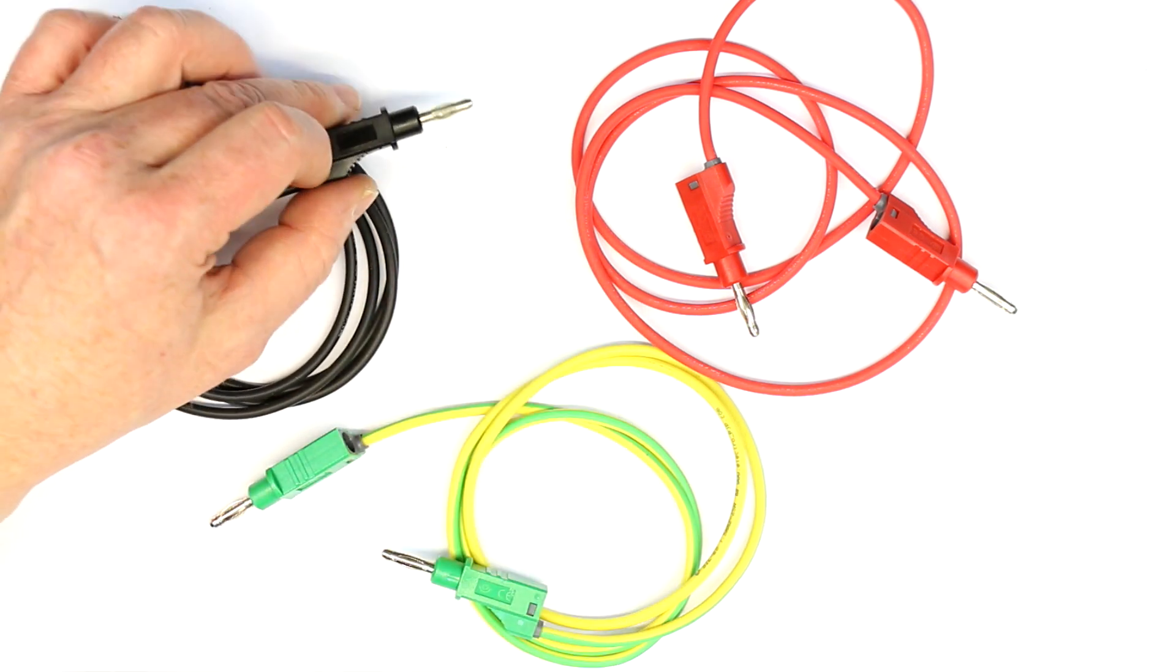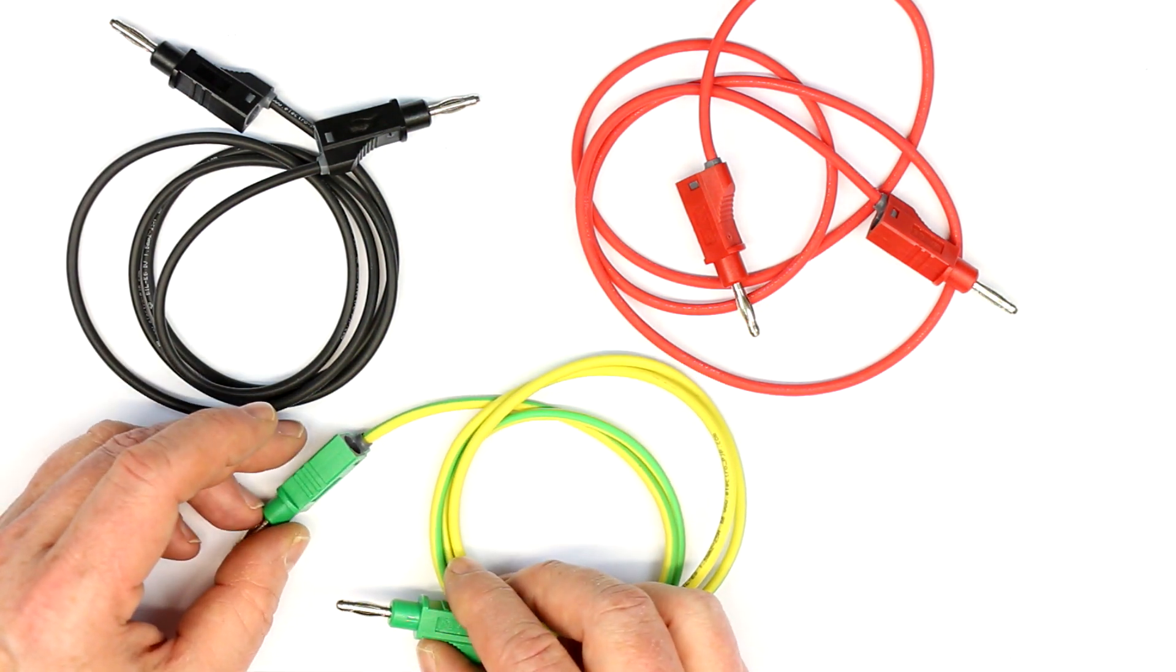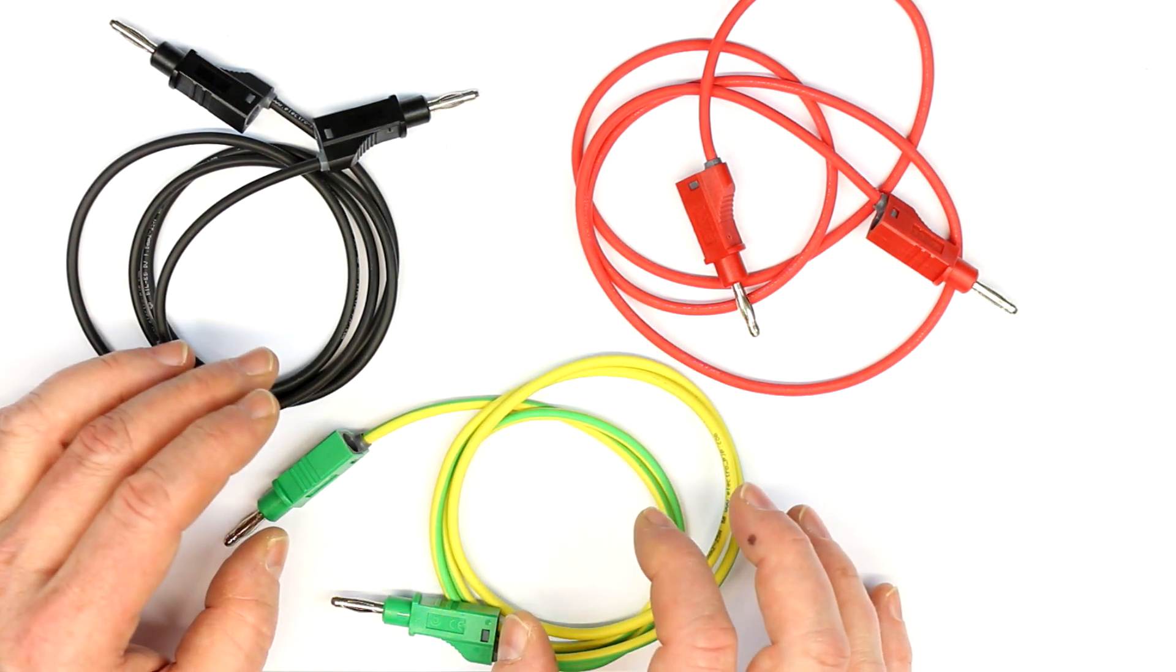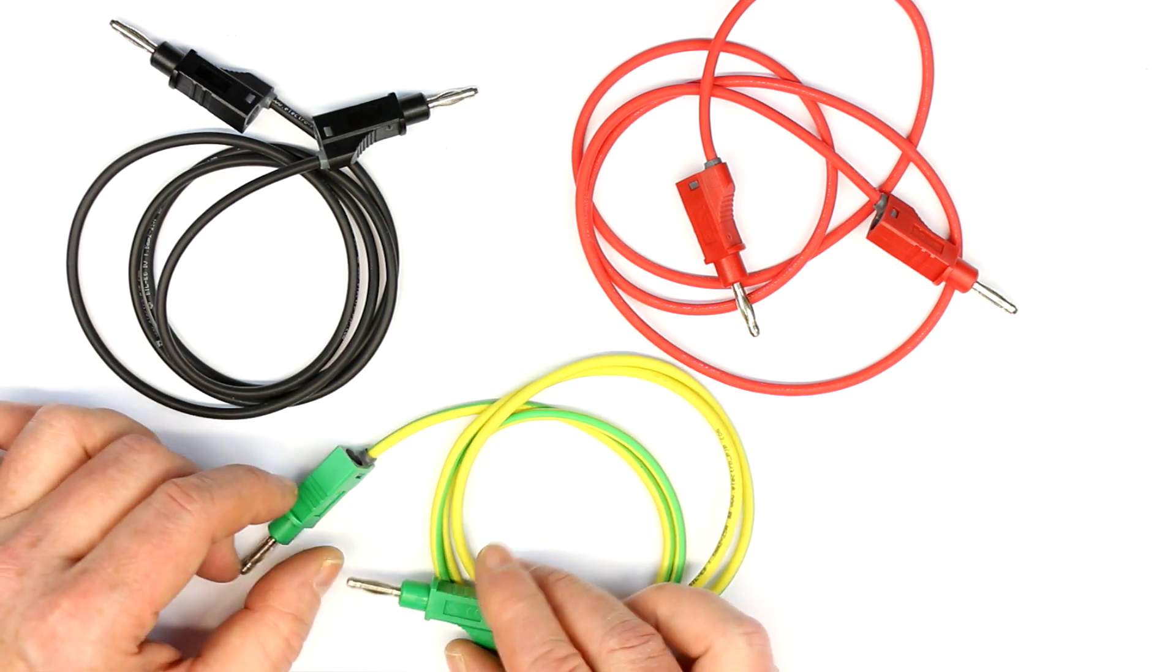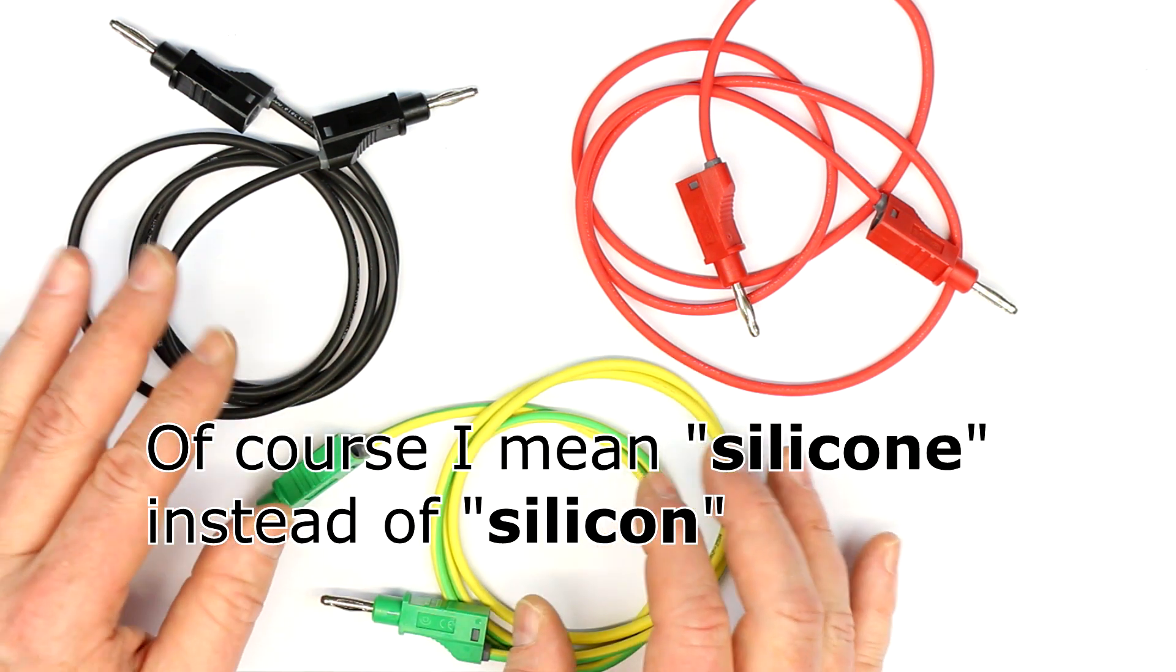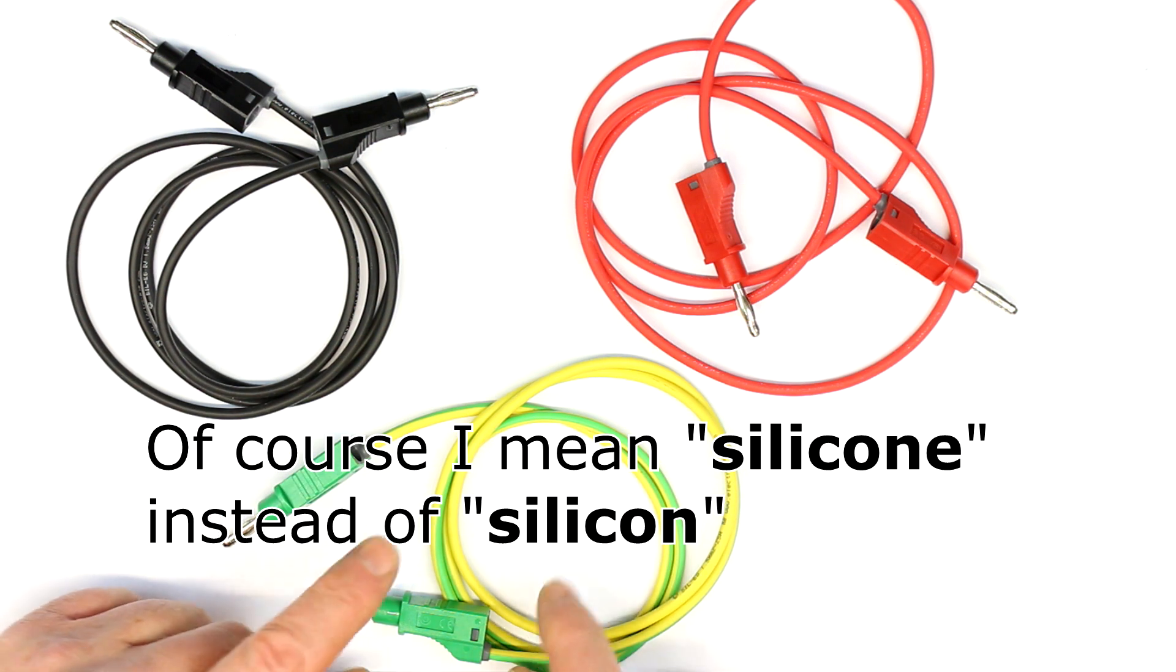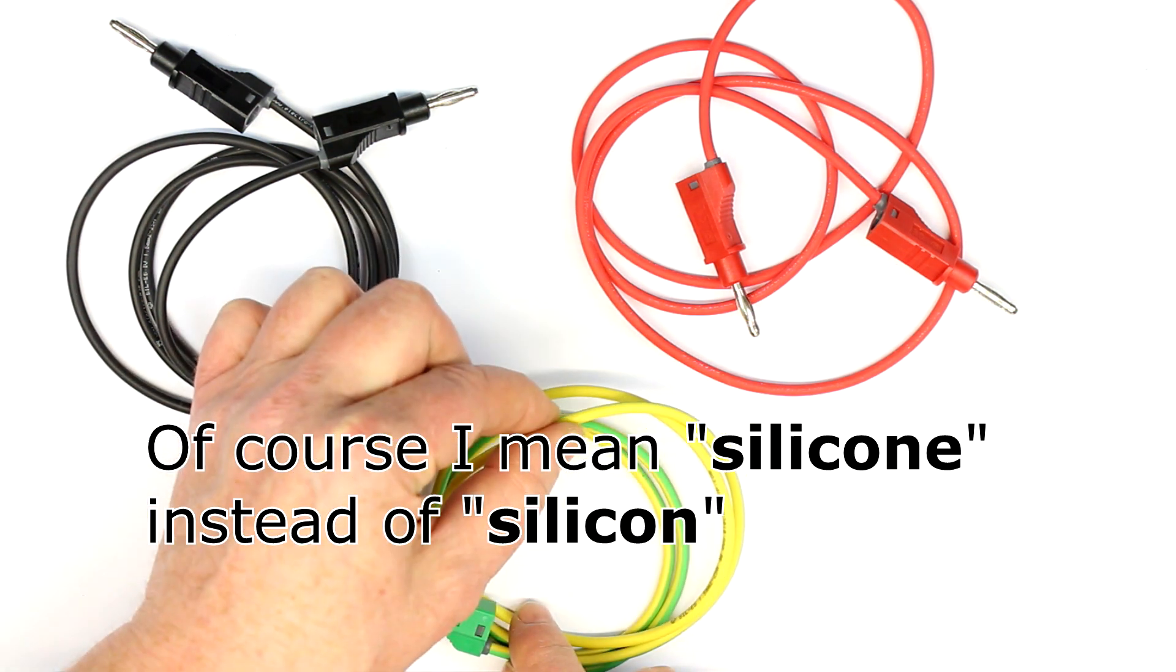The third thing is you should watch out for not to get the cheap PVC cables, but extremely flexible silicon cables. And silicon cables have two advantages. Of course, the silicon is the outer insulation.